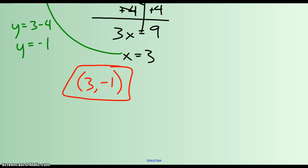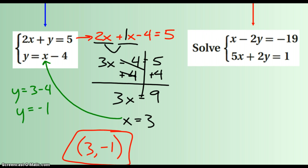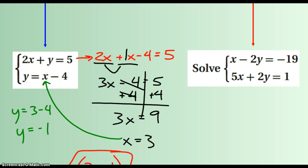And you can go back and check, and that should work for both of them. Plug 3 in for x, and you should get negative 1 for y. We know that it works for the bottom one. Let's check it real quick.